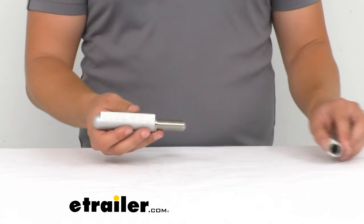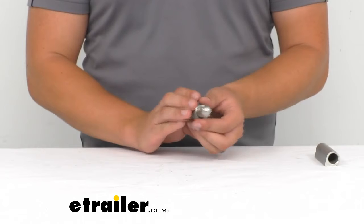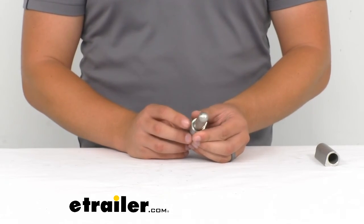Now if we open up the hinge here and look at our pin, it's going to be a five eighths inch diameter pin.